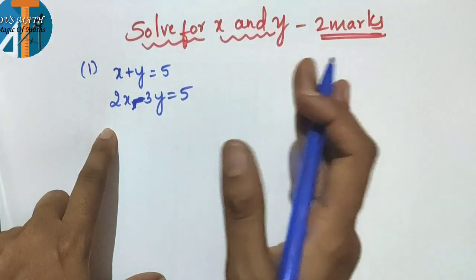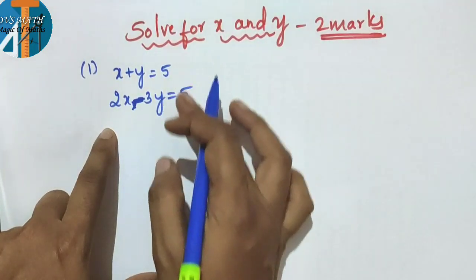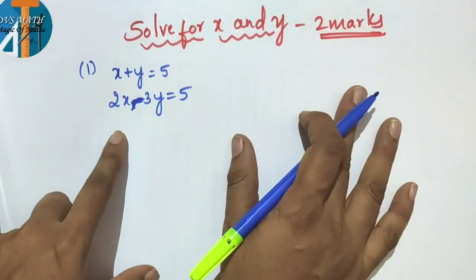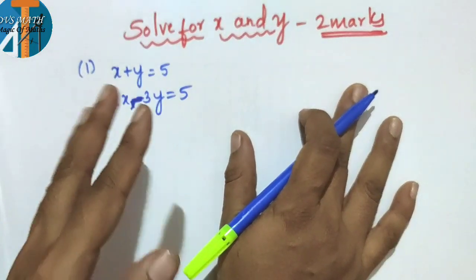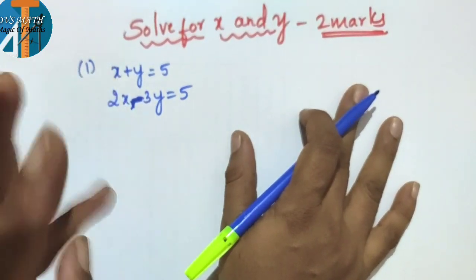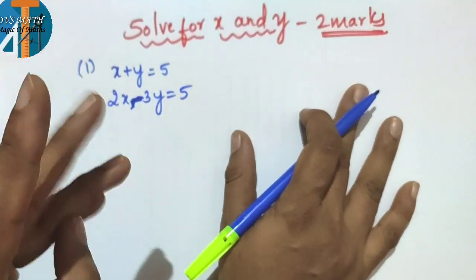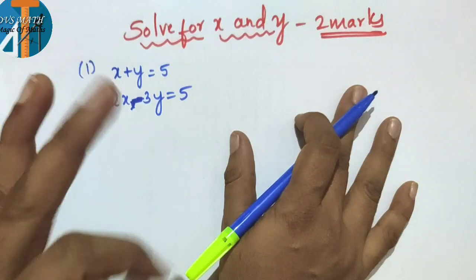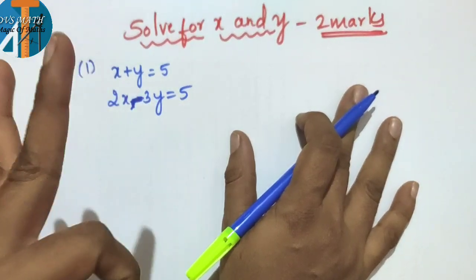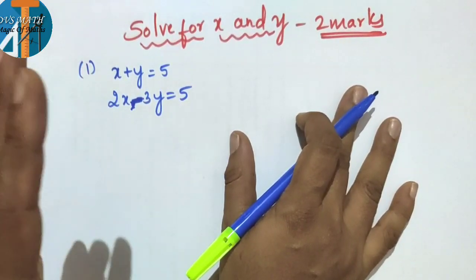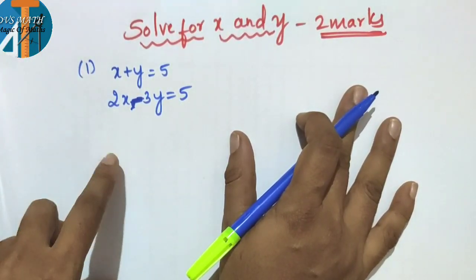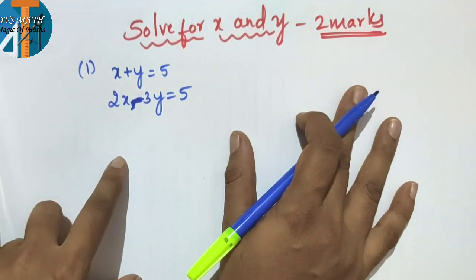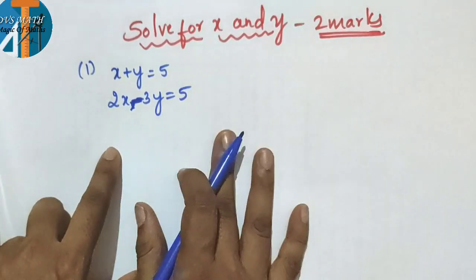This is solve pair of linear equations. For this you have 3 methods: substitution method, elimination method, or cross multiplication method. Elimination is very simple and confusion will be less, so you will use this method.